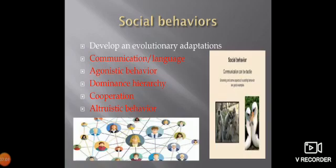Social behavior includes developmental and evolutionary adaptations. These include: communication and language, agonistic behavior, dominance hierarchy, cooperation, and altruistic behavior. Communication is when one animal transmits information to another animal, causing some kind of change in the receiving animal. Animals communicate through visual signals, auditory (sound-based) signals, chemical signals involving pheromones, and tactile (touch-based) cues.